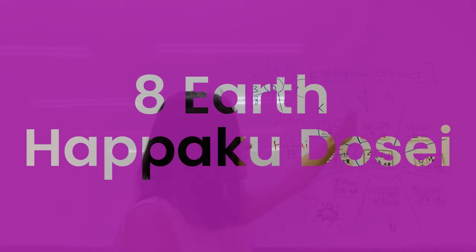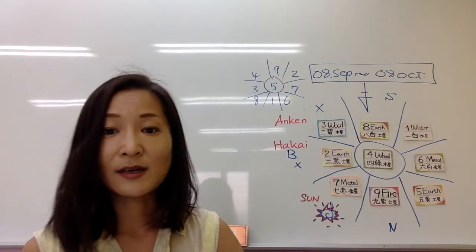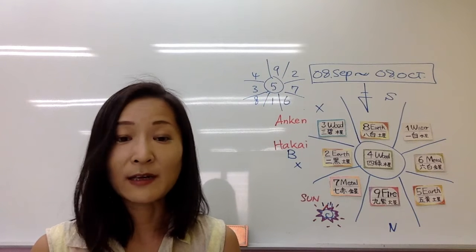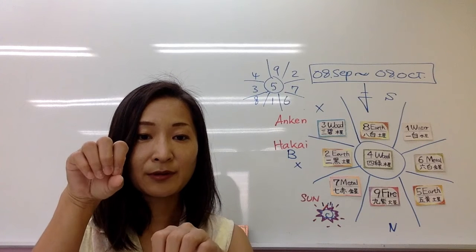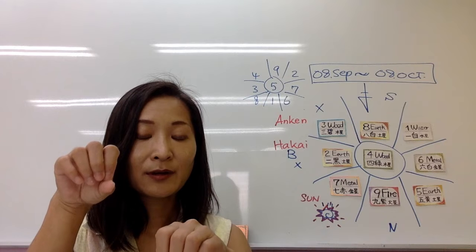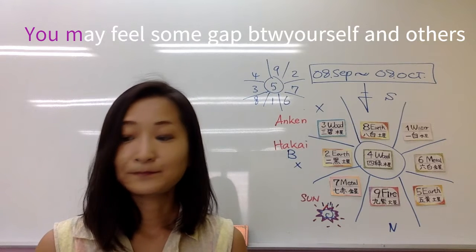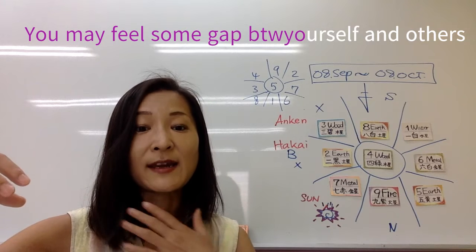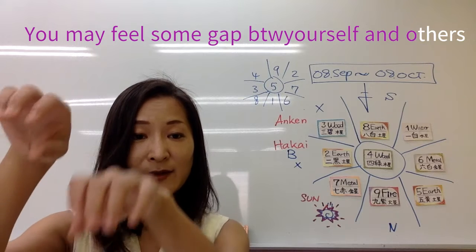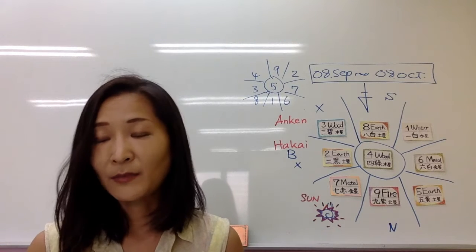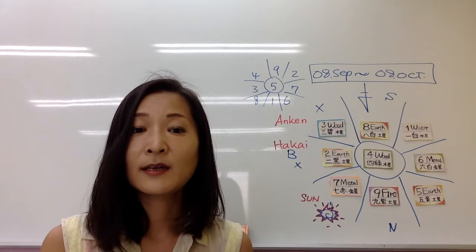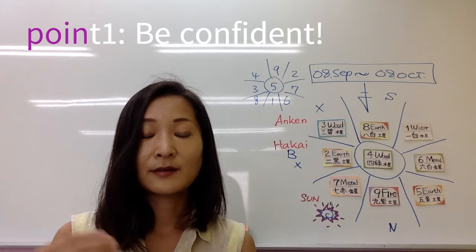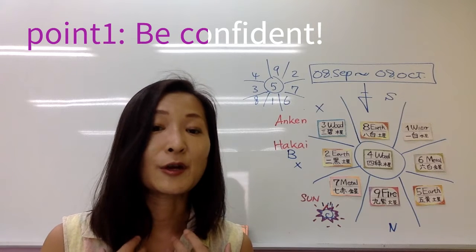Okay, let's move to 8 earth, Hapaku Dosei. Hapaku Dosei is on the 9 fire, Kyushi Kasei. In September, you feel something, a gap. What's gap? It's something your images between outside images and your own images. There is some gap, and something you don't have confidence. Please don't take care of it.